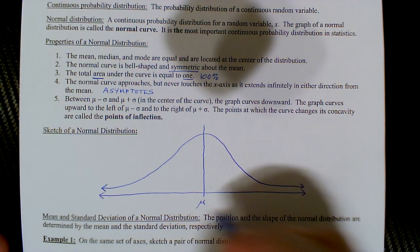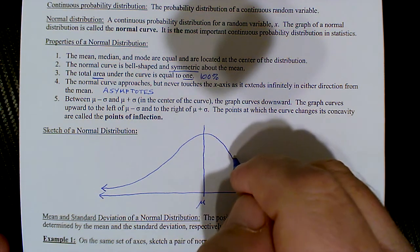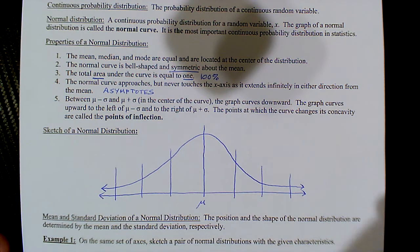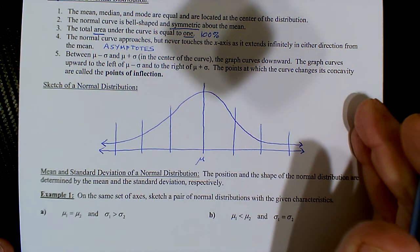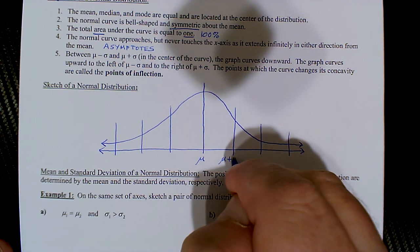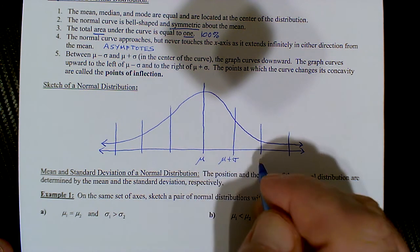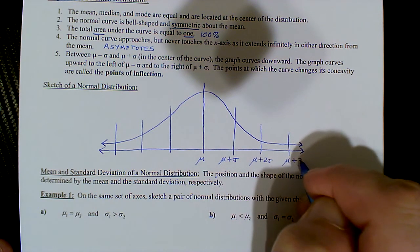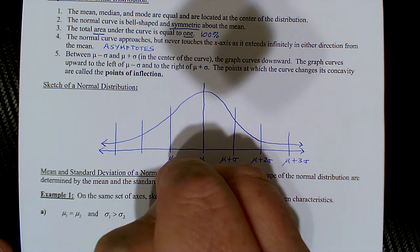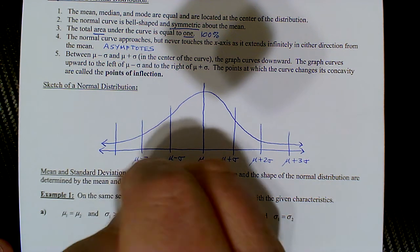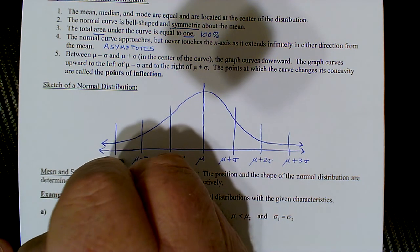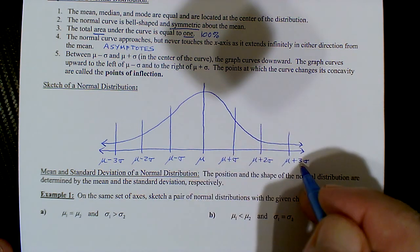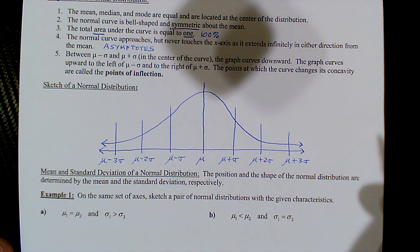As we've seen with the empirical rule, if we label three standard deviations on either side of the mean, it encompasses 99.7% of the data — almost all of it. Each bar represents a distance of one standard deviation: mu plus sigma, mu plus two sigma, mu plus three sigma, and in the opposite direction mu minus sigma, mu minus two sigma, mu minus three sigma. Now the idea is that we want to find areas between values that are not exactly a multiple of a standard deviation away from the mean.